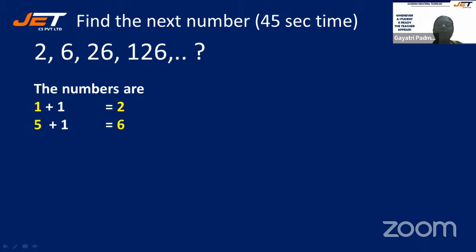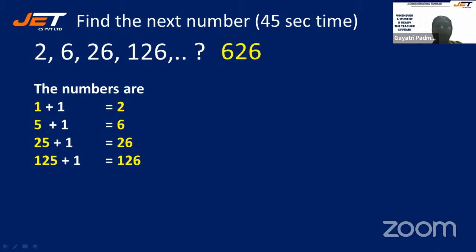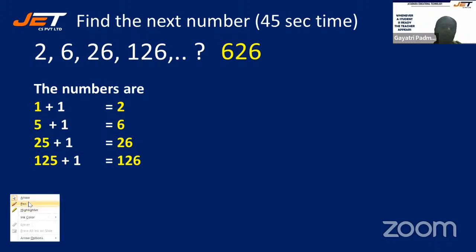If you observe the numbers: 1+1 gives 2, then 5+1 gives 6, 25+1 gives 26, 125+1 gives 126. So the pattern is powers of 5 plus 1. The next term would be 5 power 4 which is 625, plus 1.